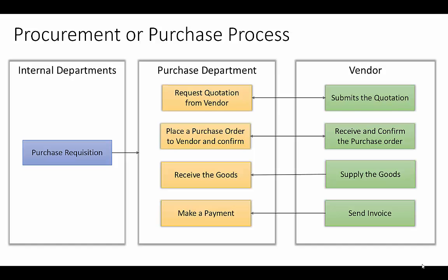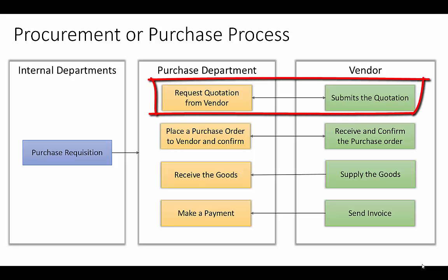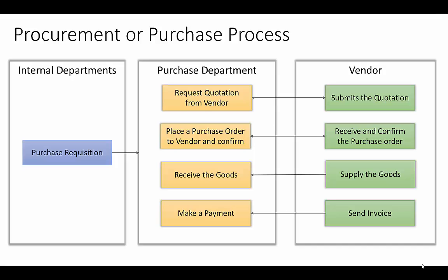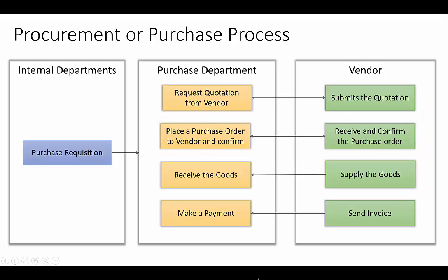Let us go through the business process simulation of the purchase process. In response to a purchase request, whether it is coming from an internal department or from a sales department to purchase goods to meet customer demand, the purchase department can request a quotation from multiple vendors. Based on the responses received, we may compare them and choose the best vendor. We may go through several rounds of negotiations before finalizing, or we may place the purchase order directly to a vendor if we have a trusted or approved vendor relationship.